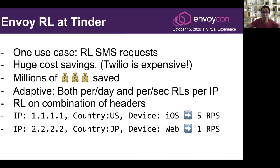We have very adaptive rate-limits: for each IP there is a per-day and a per-second quota, and we can rate-limit on a combination of headers. So if one user has IP 1.1.1.1, their country is US, and their device is iOS, they might have a five-requests-per-second rate-limit. While if they have a different IP address, their country is Japan, and the device is web, they would have a lower rate-limit.